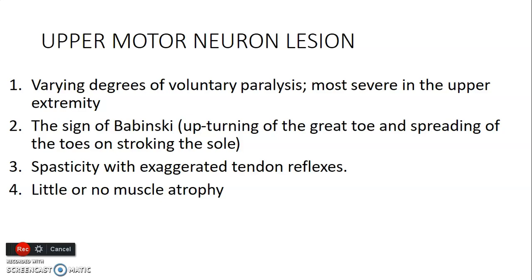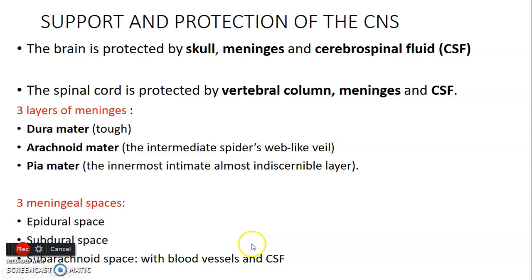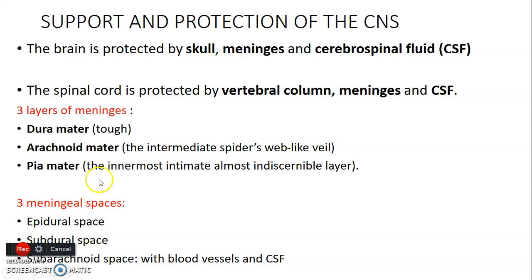We go to support and protection of the central nervous system. The brain is protected by the skull, meninges, and CSF, while the spinal cord is protected by the vertebral column, meninges, and cerebrospinal fluid. The meninges have three layers: dura mater, the outermost tough layer; arachnoid mater, the intermediate layer that forms like a spider web; and pia mater, the innermost layer that is intimate with the CNS. The arachnoid and pia together form the leptomeninges. The three meningeal spaces are: epidural (outside dura), subdural (between dura and arachnoid), and subarachnoid (between arachnoid and pia), which contains blood vessels and CSF.